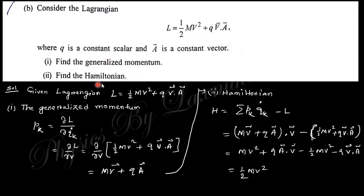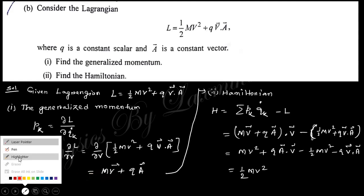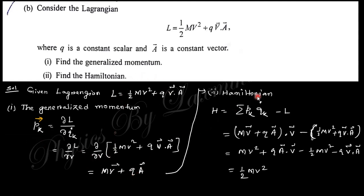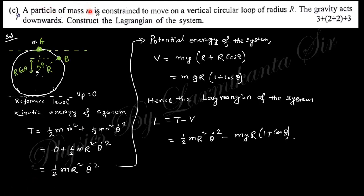The next question gives a Lagrangian and asks to find the generalized momentum and the Hamiltonian. The generalized momentum is p = ∂L/∂q̇, where q̇ is the generalized velocity — here denoted as velocity v. Taking the partial derivative with respect to v gives mv + qA in vector form. The Hamiltonian is H = Σ pₖq̇ₖ − L. Taking the dot product v·v = v², substituting and simplifying, mv² − ½mv² = ½mv², so the Hamiltonian of the system is ½mv².